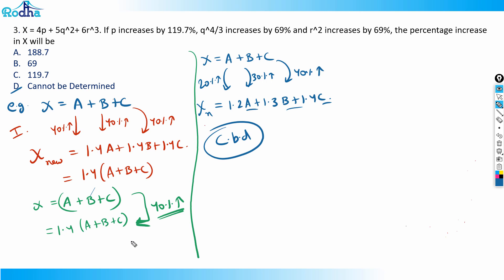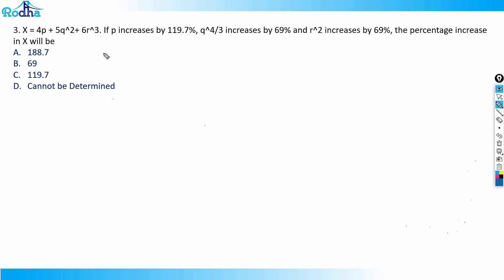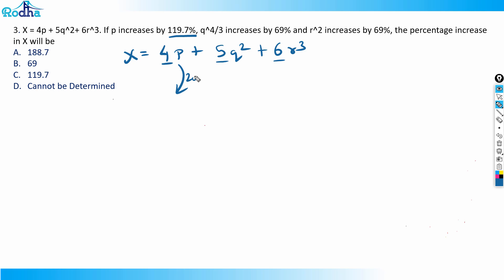So in that case it's CBD — I must know the values of a, b, c to get the answer. Now proceeding to this question: x = 4p + 5q² + 6r³. We know p increases by 119.7%. The coefficients are constants and won't affect the equation — they shouldn't bother us here.